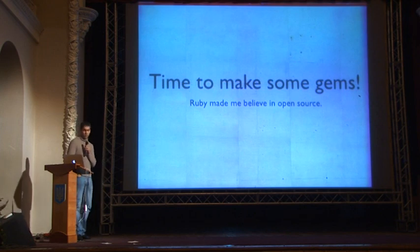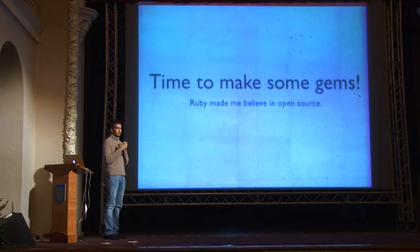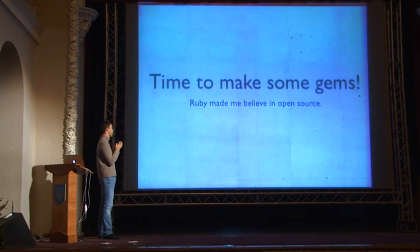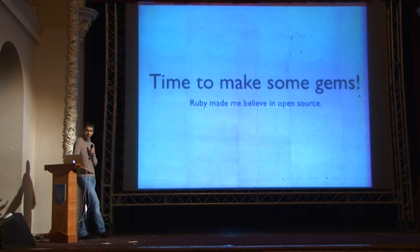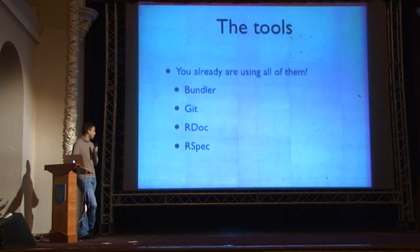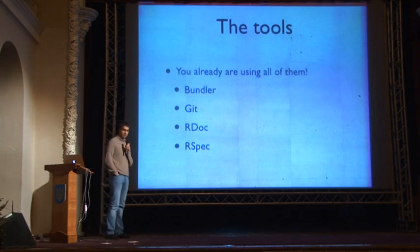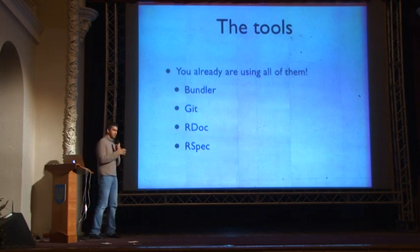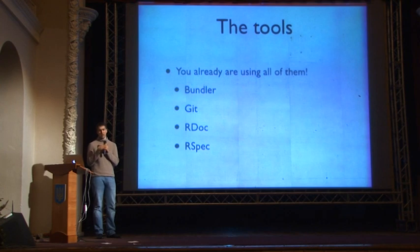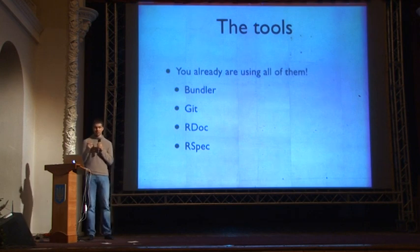Before I became a Ruby programmer, I didn't really believe in open source, because the tools to make open source were pretty unsophisticated and not easy to use. Ruby changed all that. The tools used to make gems — Bundler, Git, RDoc (the documentation tool for Ruby), RSpec as the test suite — you're already using everything you need to create gems right now in your projects. There are no special tools or complicated software to learn.